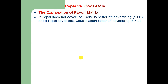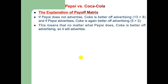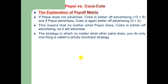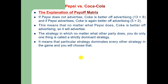If Pepsi does not advertise, Coke is better off advertising because 13 is greater than 8. And if Pepsi advertises, Coke is again better off advertising because 5 is greater than 2. So in both cases, the dominant strategy for Coke is to advertise, whether or not PepsiCo advertises. This means that no matter what PepsiCo does, Coke is better off advertising, so it will advertise. The strategy in which no matter what the other player is doing you do only one thing is called a strictly dominant strategy. For Coke, advertising is the strictly dominant strategy, meaning it dominates every other strategy in the game.